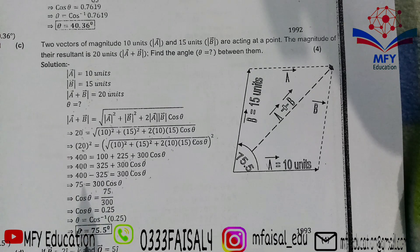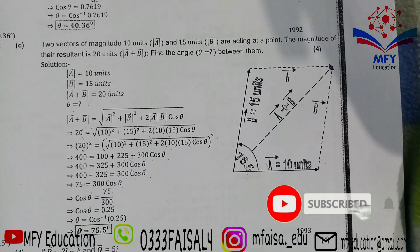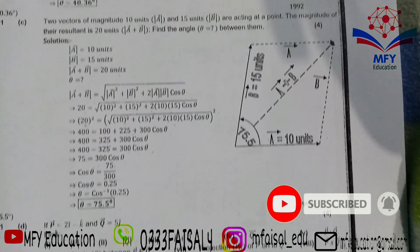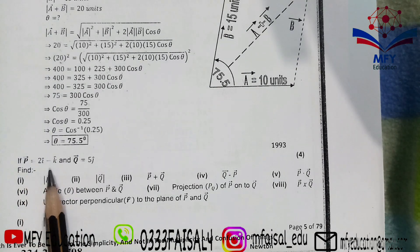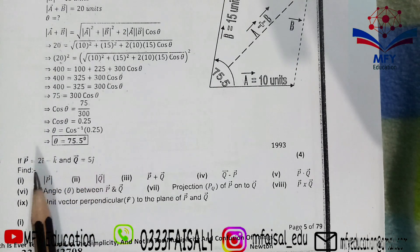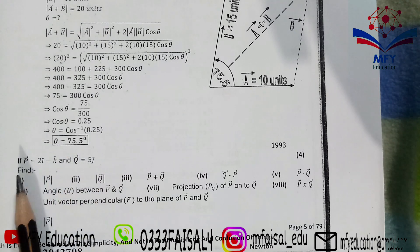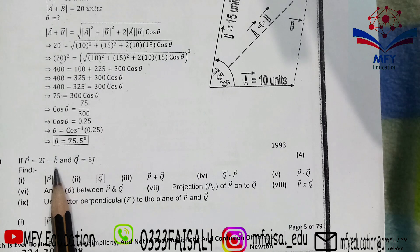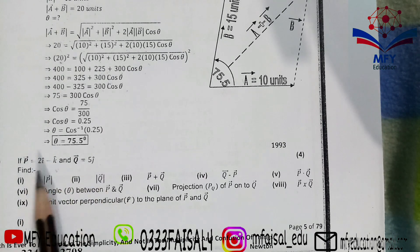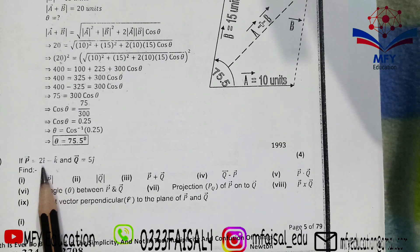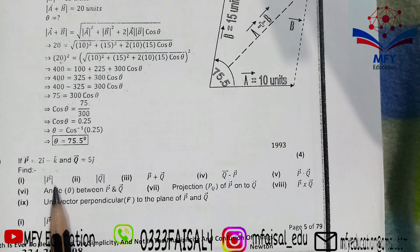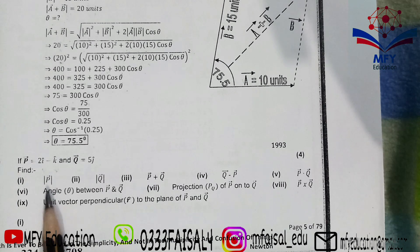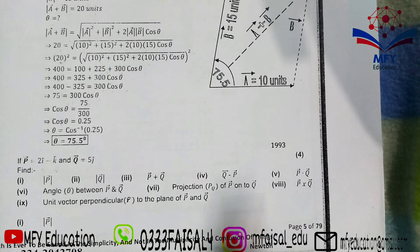That completes 1992, with 2 vector questions solved. Moving to 1993: a simpler question with p = 2i − k and q = 5j. You are asked to find mod p, mod q, p+q, q−p, p·q, the angle between them, the projection, and p×q. These are all straightforward applications.